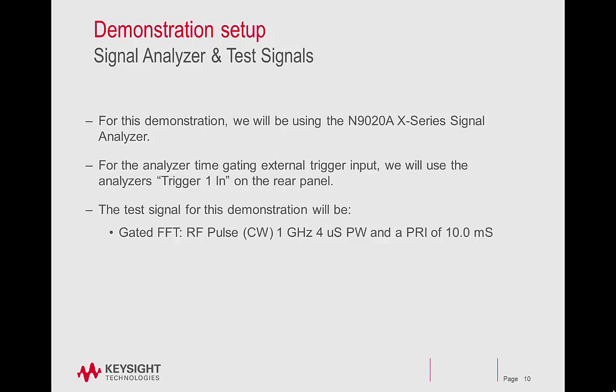For this demonstration, we'll be using the N9020A X-Series Signal Analyzer. For the analyzer time-gating external trigger input, we will use the analyzer's trigger 1N on the rear panel. The test signal will be an RF pulse CW 1 gigahertz with a 4 microsecond pulse width and a pulse repetition interval of 10 milliseconds.